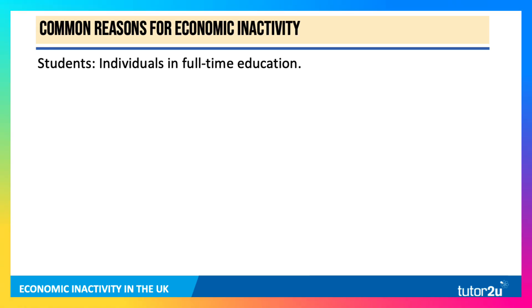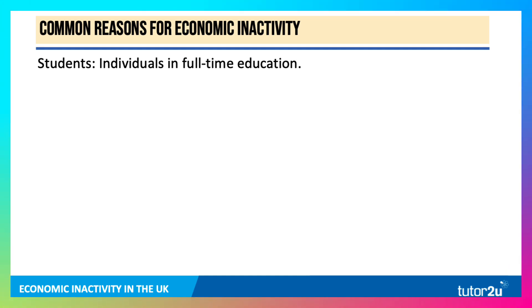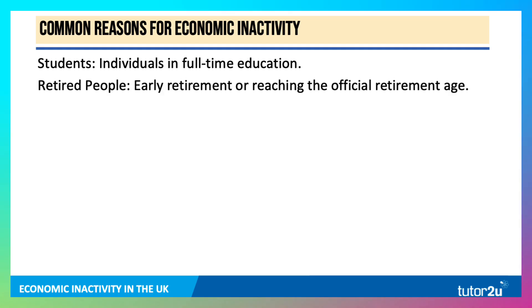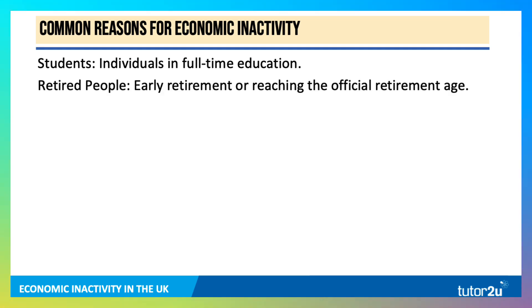Common reasons include students — if you stay in full-time education, obviously many students do work, having full-time or part-time jobs, but many elect to remain in full-time education, so they're economically inactive. People might take early retirement, or they might reach the official retirement age, but early retirement is a factor.